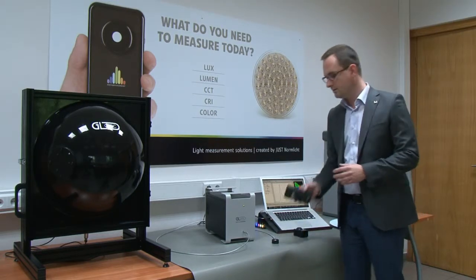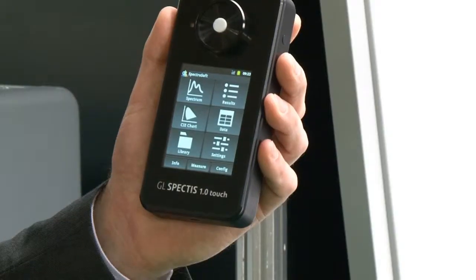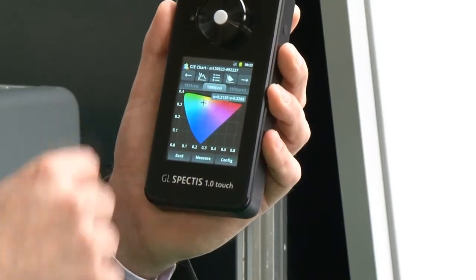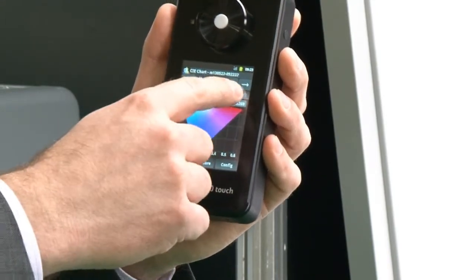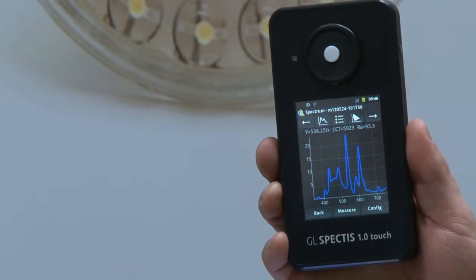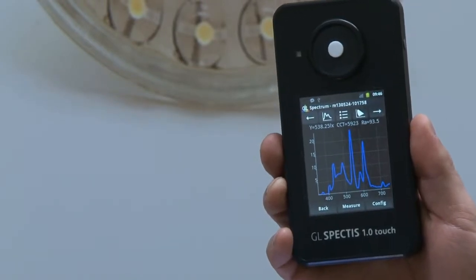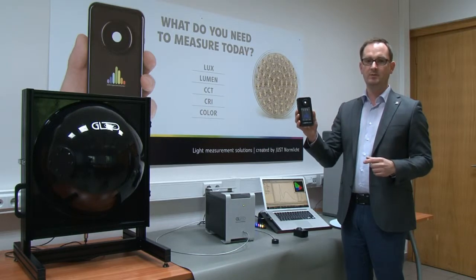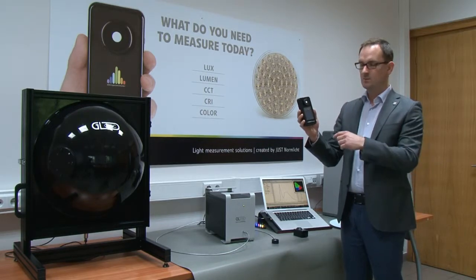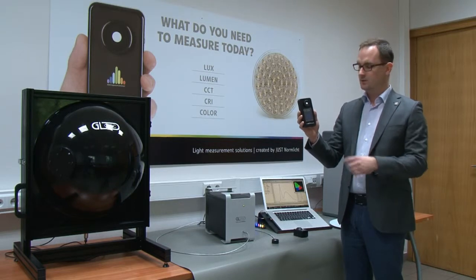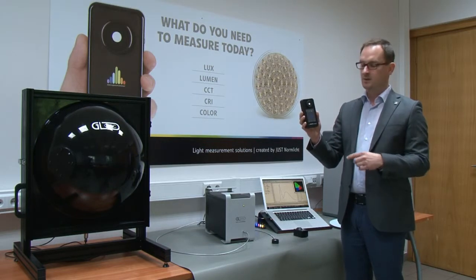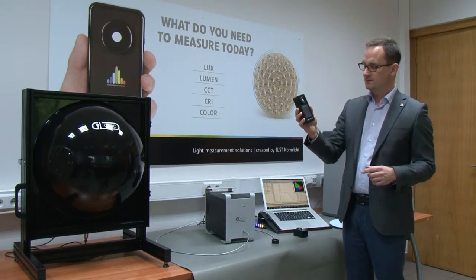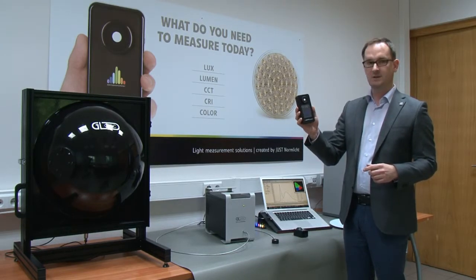Today I'm going to show you our handheld SPECTIS ONE TOUCH spectroradiometer, designed for light assessment, which can be equipped with a cosine corrector for illumination measurement. This way we can obtain the spectral power distribution and the value of illumination in lux, as well as other parameters calculated onboard. We are using an Android-based system and the calculations are made directly on the device when the measurement is taken.